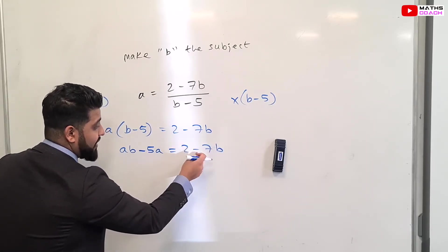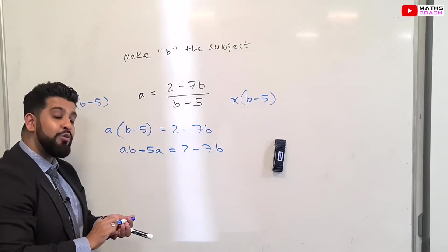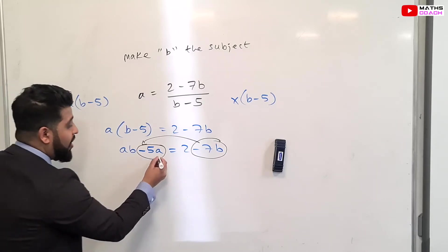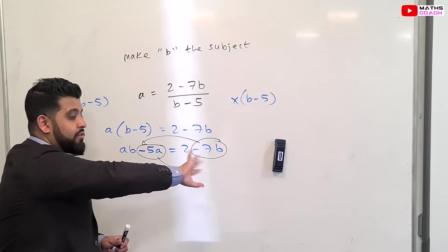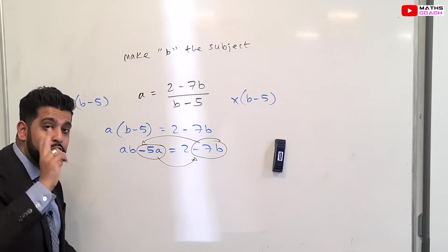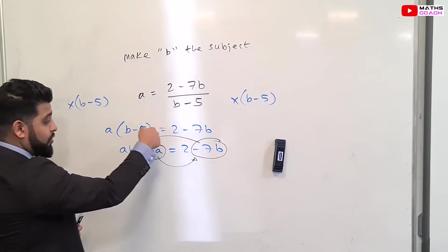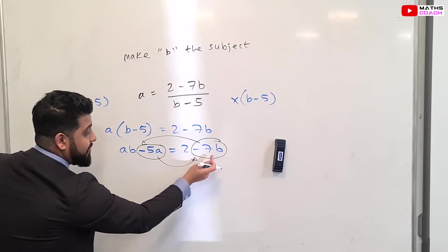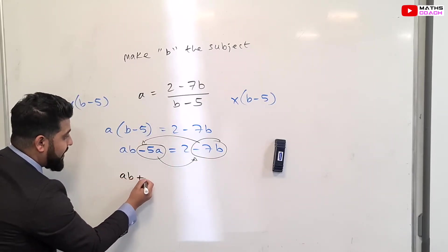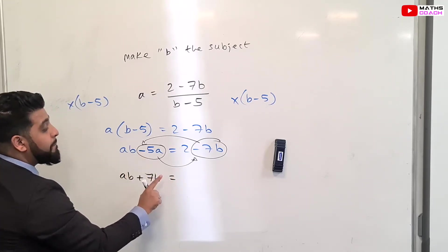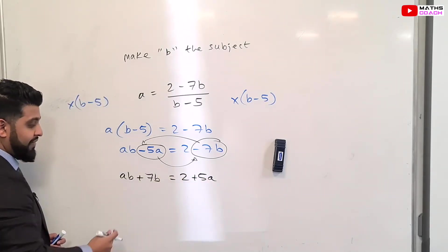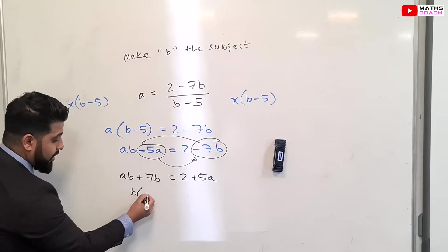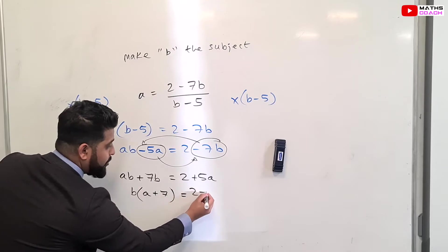Now we want to get the B's onto one side. So we want to get this minus 7B over onto this side, and I'm also going to take this minus 5A over onto this side. Because I want B's over on this side only and everything else over there. So there are two steps going on, please follow that. I'm taking the minus 7B over onto this side, and I'm taking the minus 5A over onto this side. That will look like this: AB plus 7B because the sign will change, remember? So we have AB plus 7B equals 2 plus 5A. And there we have it. All the B's are onto one side and everything else is over there.